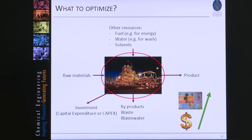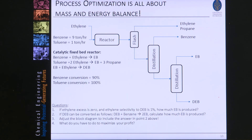We will also have to minimize or simplify equipment, which means we should also minimize the capex or investment. So to sum up: process optimization is all about mass and energy balance.